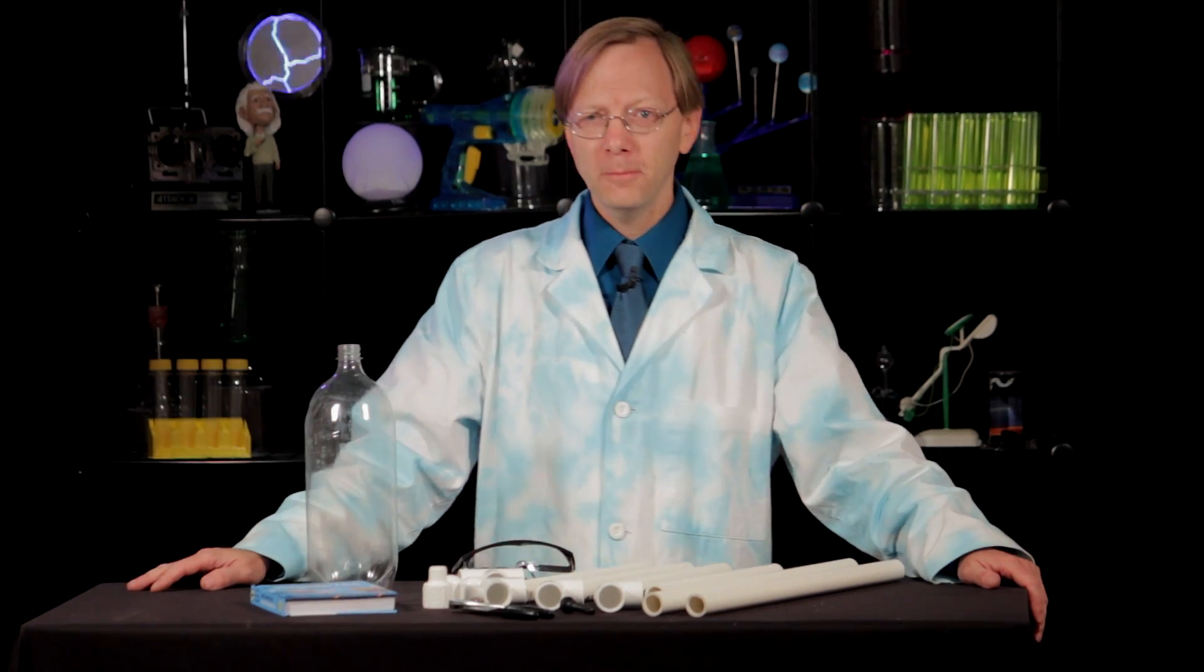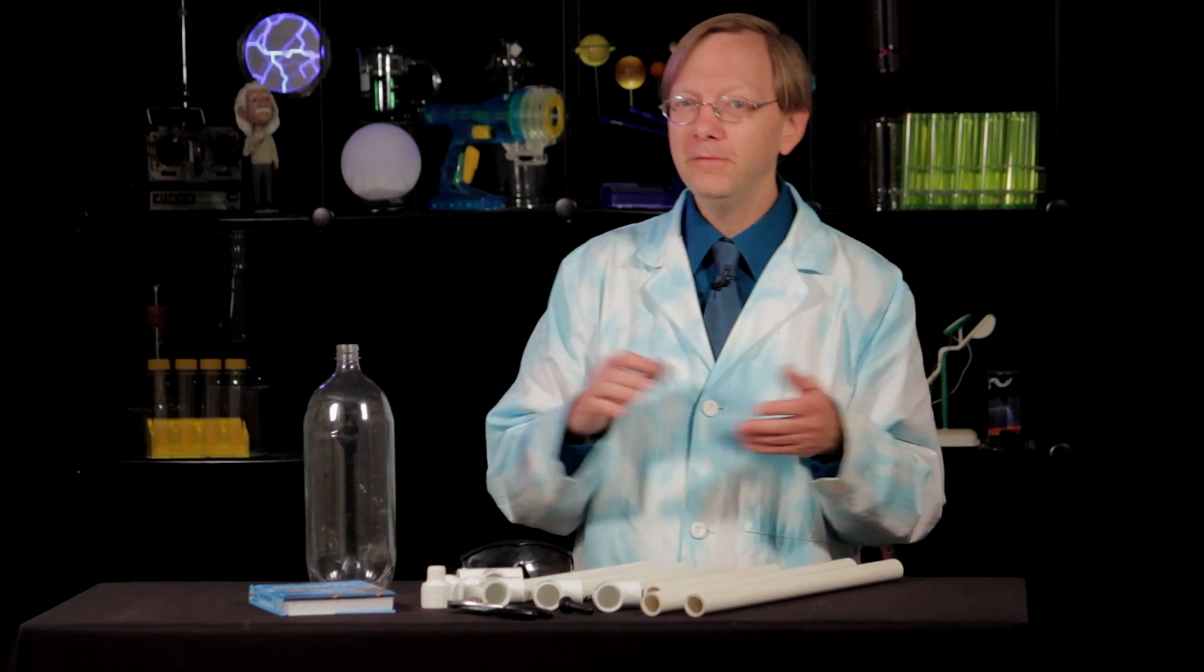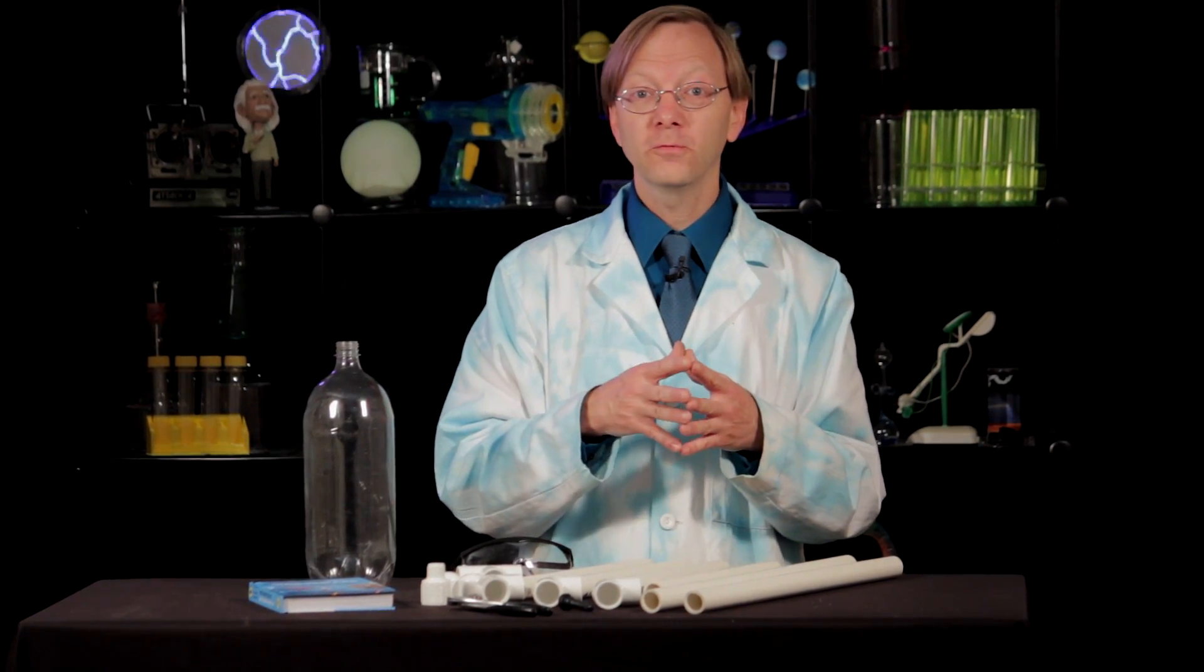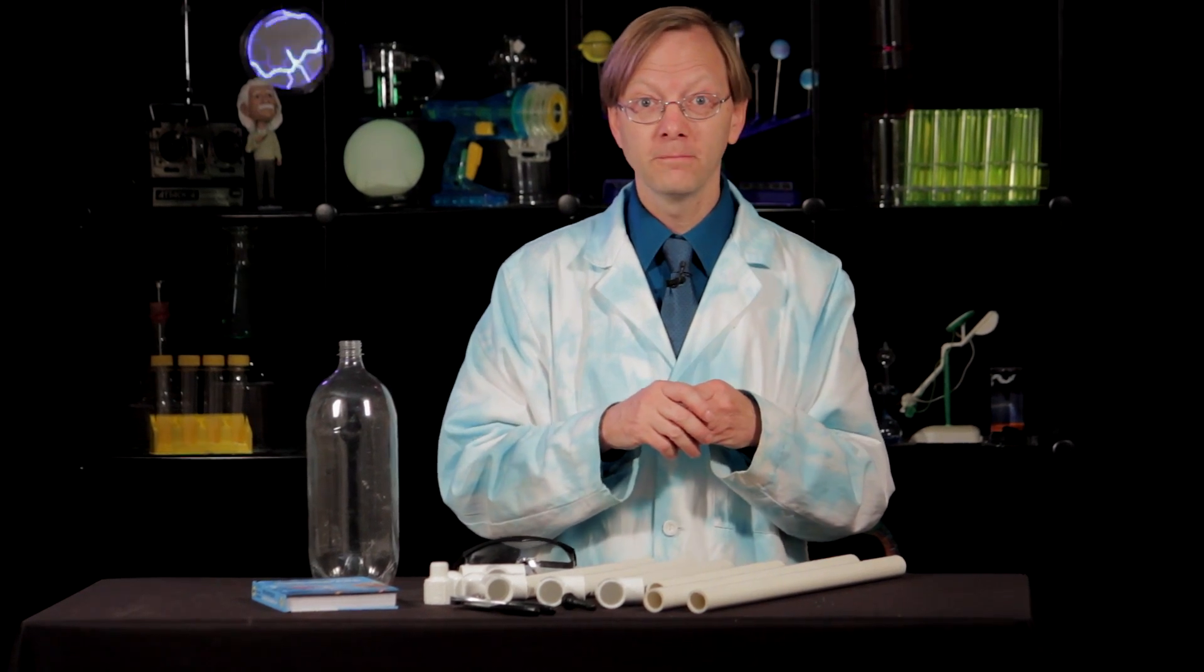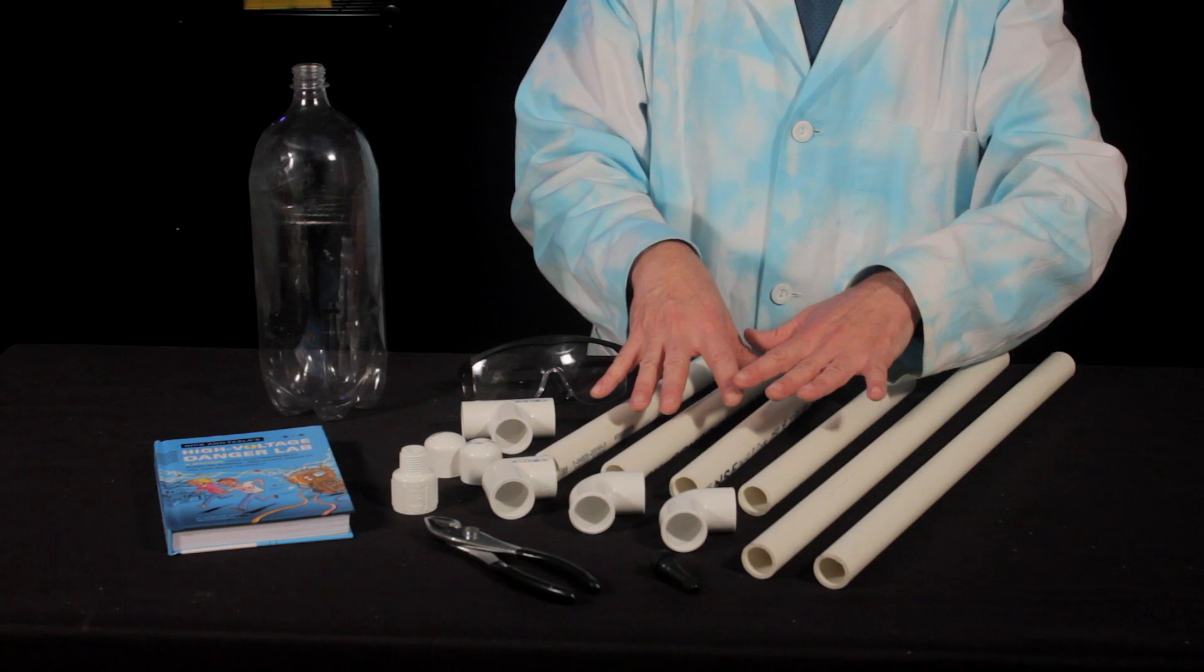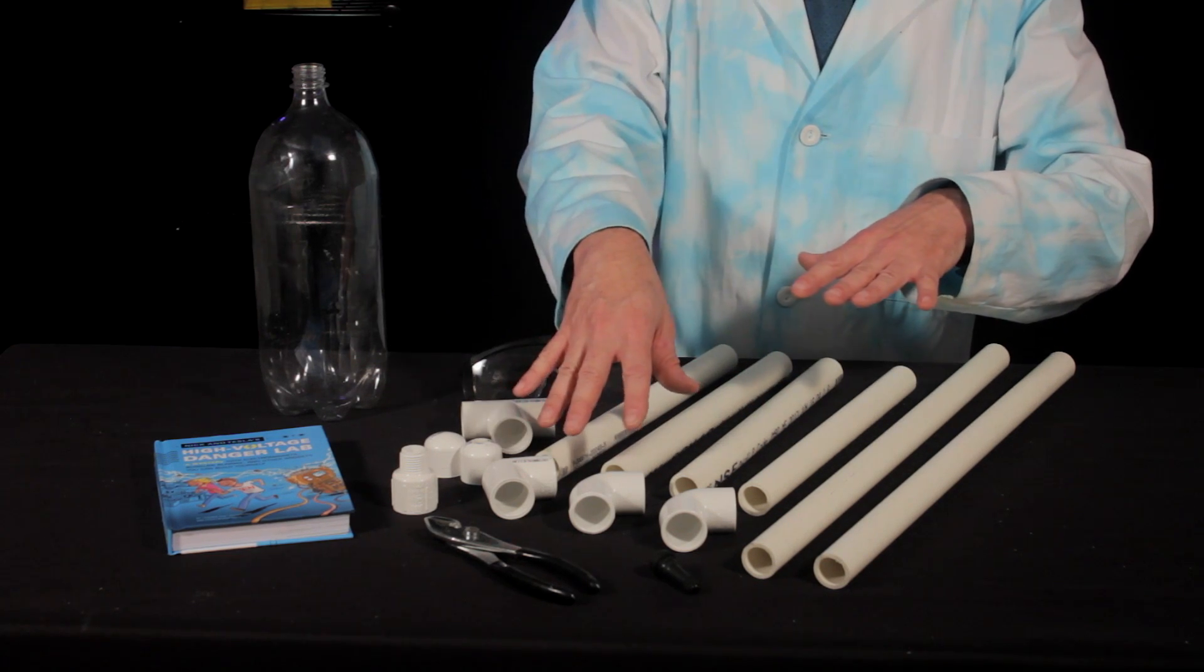Okay, so in order to build your water-powered bottle rocket launcher, you're going to need mostly PVC pipe. Now if you go to the hardware store, they'll often cut this for you so that you don't even have to cut it yourself. Here's what you're going to need: two 20-inch pieces, four 10-inch pieces, three 90-degree angle pieces, two end caps, a T-piece, a threaded reducer.